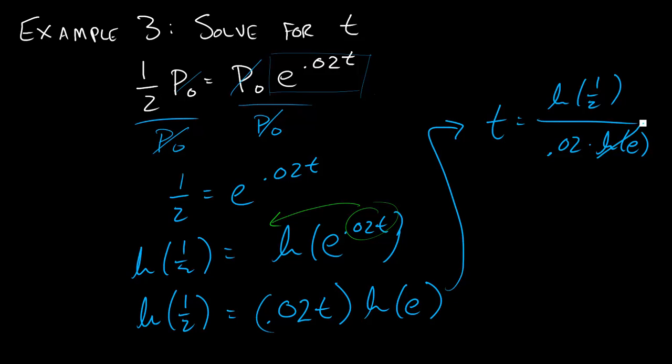So we'll have t is equal to the ln of 1/2 divided by 0.02. If you type that into your calculator, you will get t equals negative 34.66.